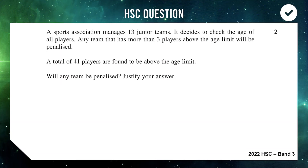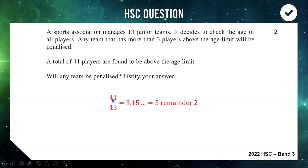Let's look at some HSC questions. This first one is from the 2022 HSC, band 3. A sports association manages 13 junior teams. If any team has more than three players above the age limit they'll be penalized. There are 41 players in total above the age limit — will any team be penalized? To get full marks you need to justify your answer using the pigeonhole principle. Our 41 over-age players are the pigeons and the 13 teams are the pigeonholes.